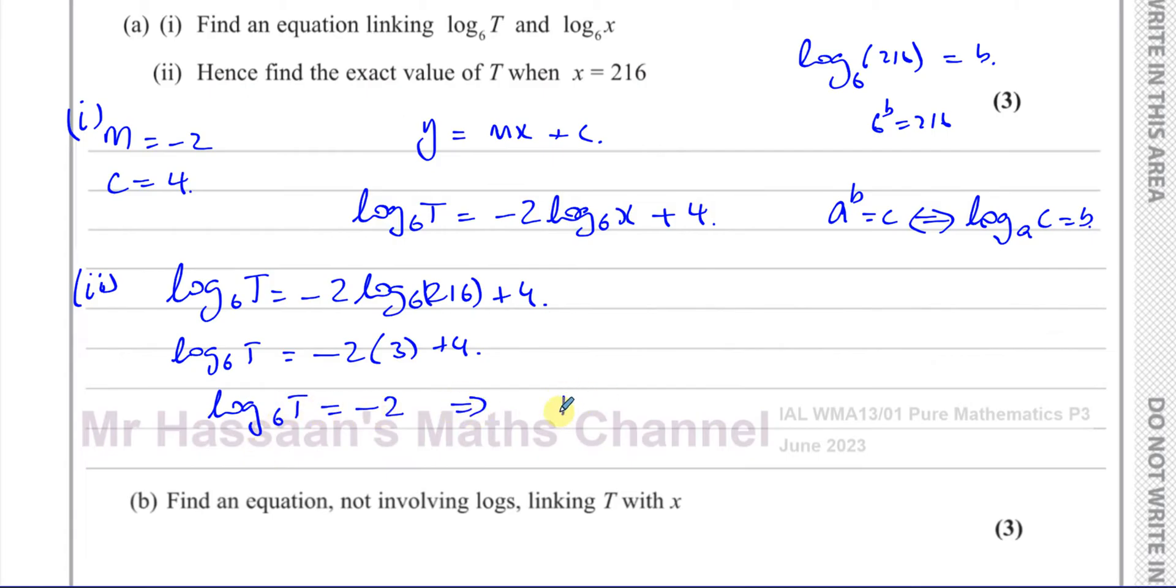So we can say, therefore, that T equals 6 to the power of minus 2, which you can write as 1 over 6 squared, which is 1 over 36. So T equals 1 over 36. That's the exact value of T when X equals 216. So we've completed A part 1 and A part 2.